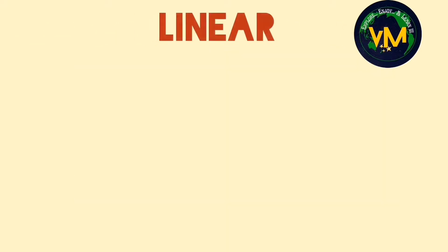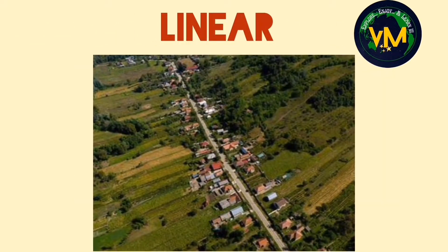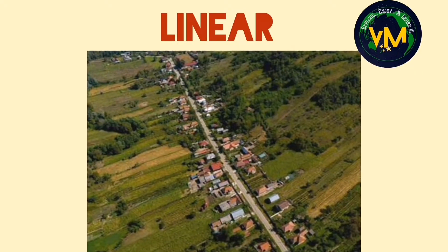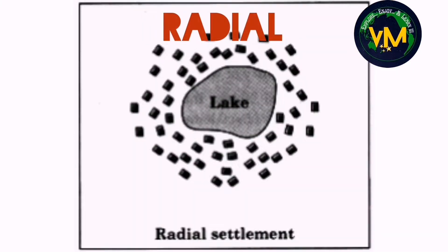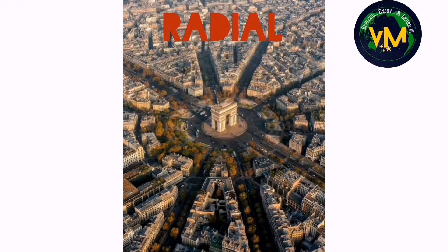Third is linear. In this, the huts will be arranged on either sides of a road, a railway line, or a river over a long distance. Radial settlement pattern — as you can see from the picture, usually in the center we have a lake, a monument, or a temple, and the houses spread out in all directions with this as the center.